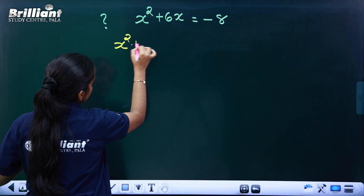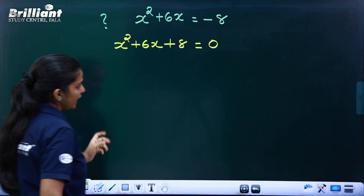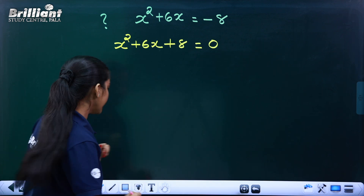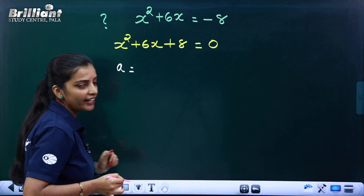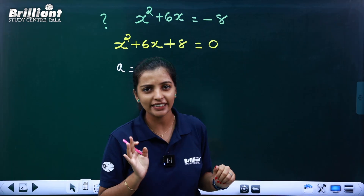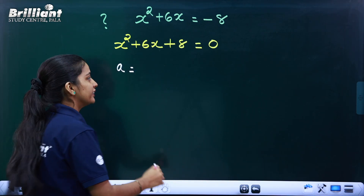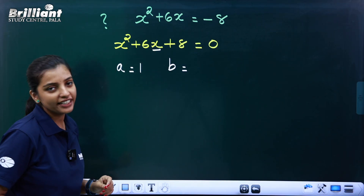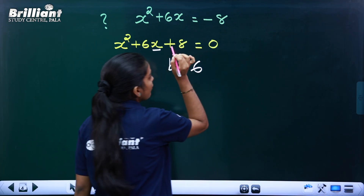So where do we find x² plus 6x plus 8 equal to 0? Now we must find A, B, and C. A: the coefficient of x² is 1, so A is equal to 1. B: the coefficient of x is 6. C is equal to 8.